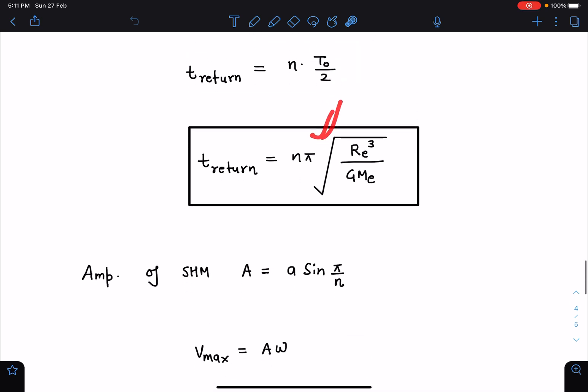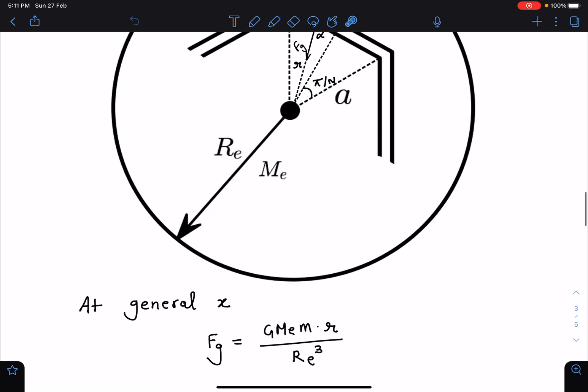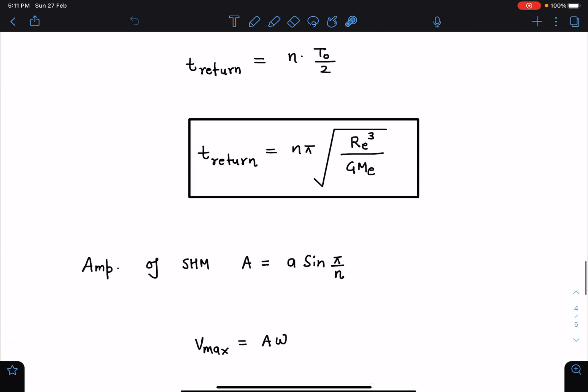Now amplitude of SHM I can say is going to be A·sin(π/N) because this angle here is π/N and this is A. So one side of this length is going to be A·sin(π/N), so that will become amplitude of SHM.